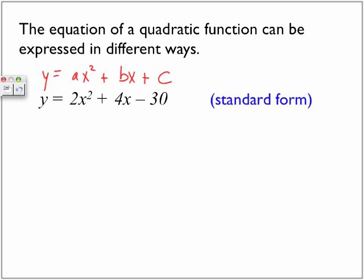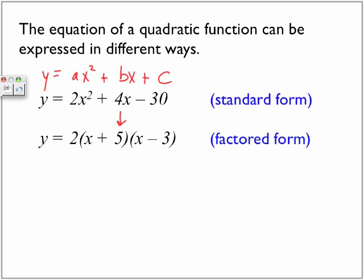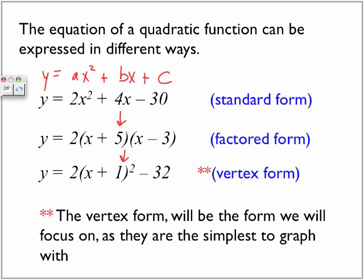So that's our standard form, and that's the form that will be very common in this chapter. Next form is what we call the factored form. It represents the same equation just written in what we call a factored form. And lastly, the same equation, we're going to show it as what we call the vertex form. And notice here, now the asterisks here for vertex form, because the vertex form will be the form we will focus on as they are the simplest to graph with.